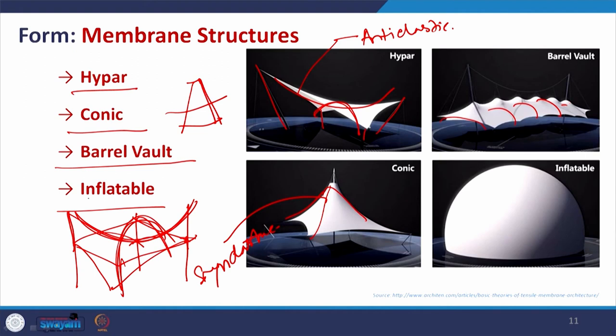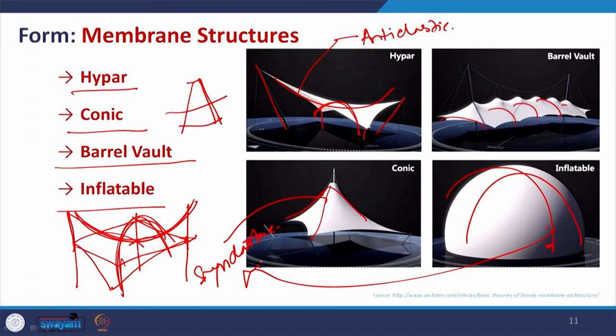The last form is the inflatable, where again curvature is similar throughout — this is your synclastic curvature — and mostly it is inflatable because it is full of air. This form is created through pressure difference: similar to blowing a balloon, the interior pressure balances the exterior pressure to give the shape stability. We will have a more thorough discussion on pneumatic structure in the next upcoming lecture.